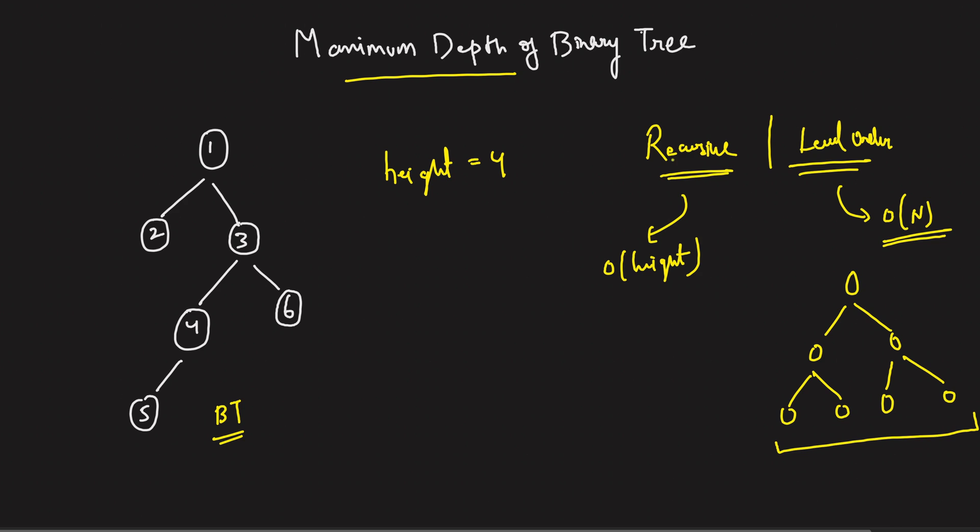But if you talk about the recursive solution, then whenever you're given a skew tree, this is what you call a skew tree, a linear tree. Whenever you're given a linear tree, the recursive traversal will end up taking stack space equal to the number of nodes. So both have their worst cases. You can use any of the traversal in order to compute the maximum depth. You can use the recursive or you can use the level order traversals.